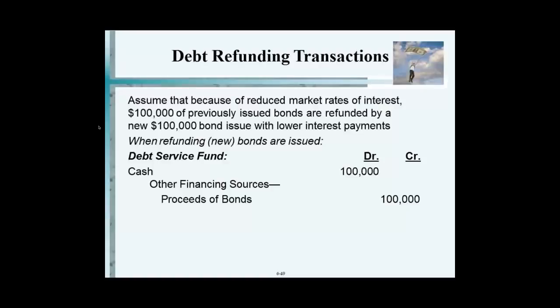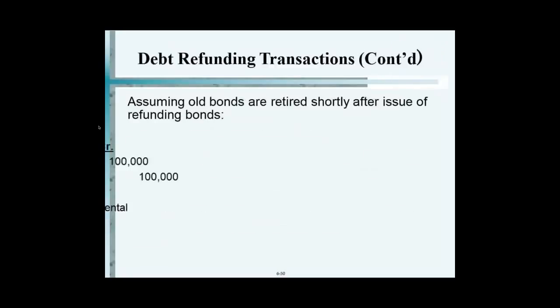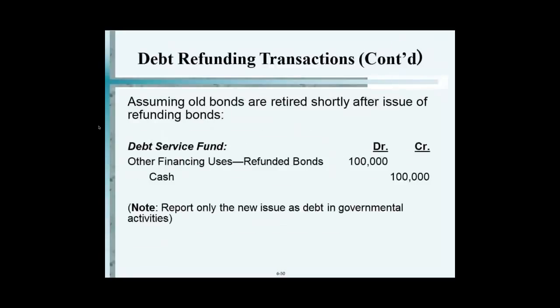Little interest on money which is sitting for six months, nine months — that would be revenue. And as you can see, they pay off one bond, and this is the old bond that they just paid off.